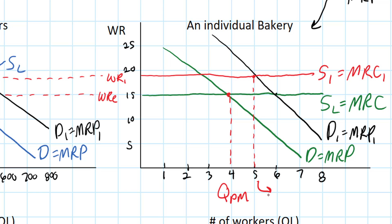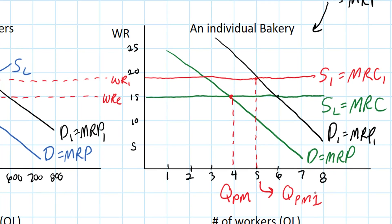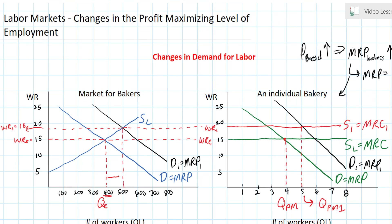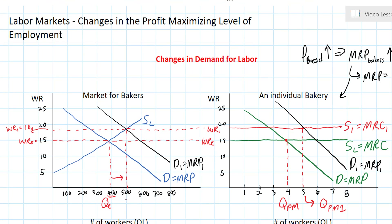Ultimately, bakeries will wish to employ five workers each. This is the new QPM — the profit maximizing quantity — we call that QPM1. And market employment, total employment in the market, will increase to 500. So we have a new equilibrium quantity in the market as a whole.